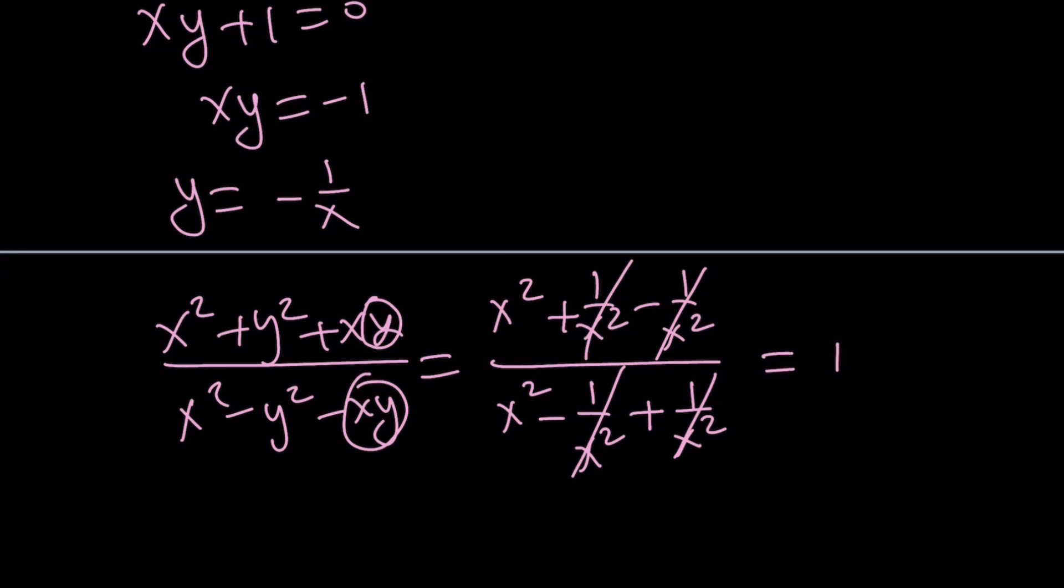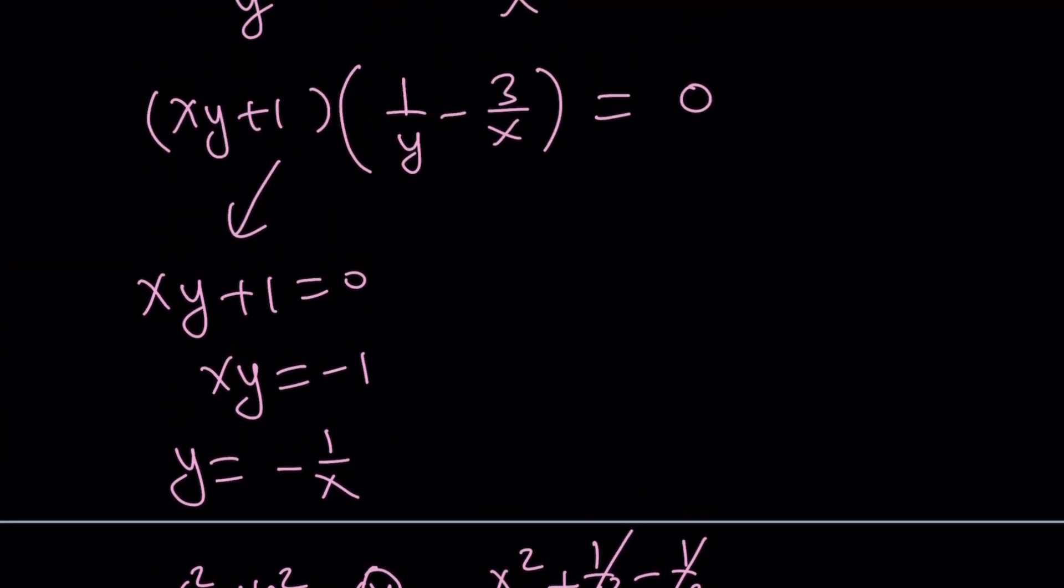And then they're going to cancel out and we're going to end up with 1. So the expression will turn into 1 if xy is equal to negative 1. So that's one numerical value we can find. If you exclude it, then you're going to end up with the other value.